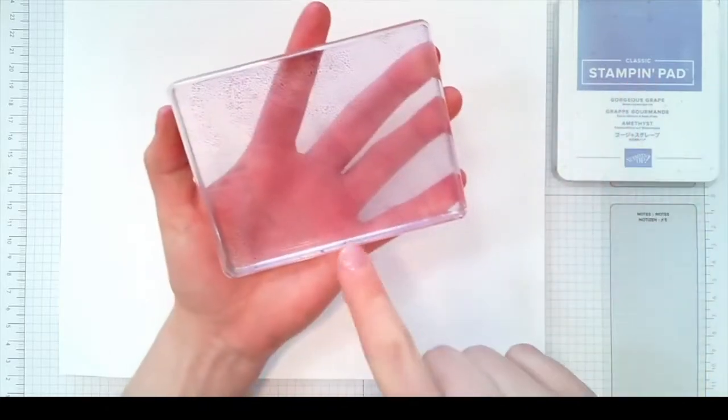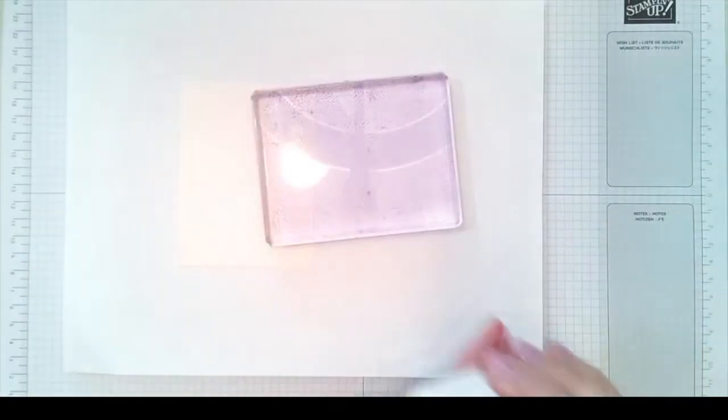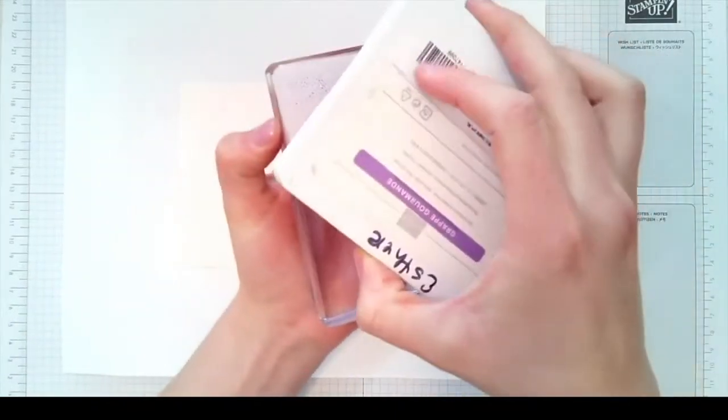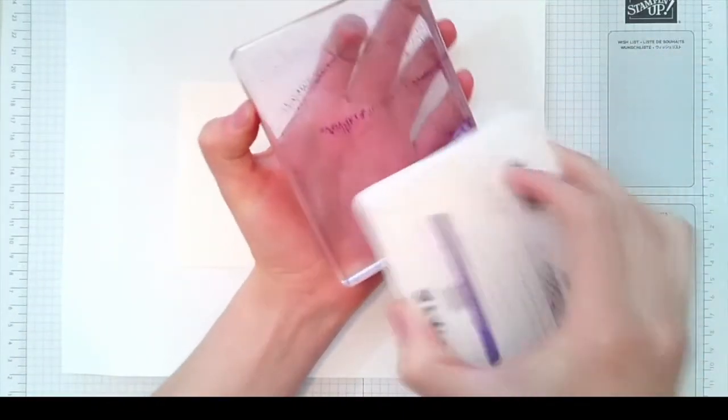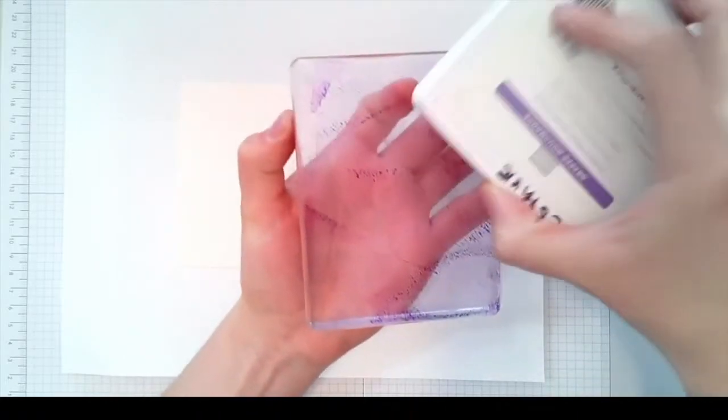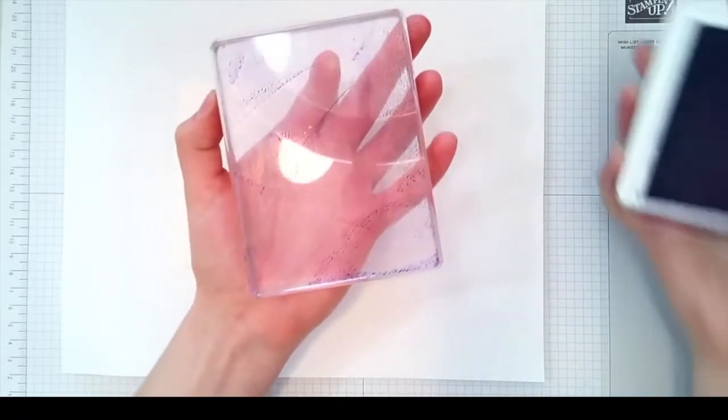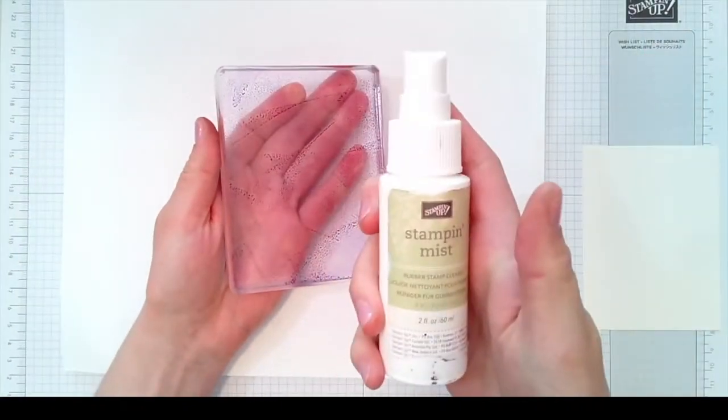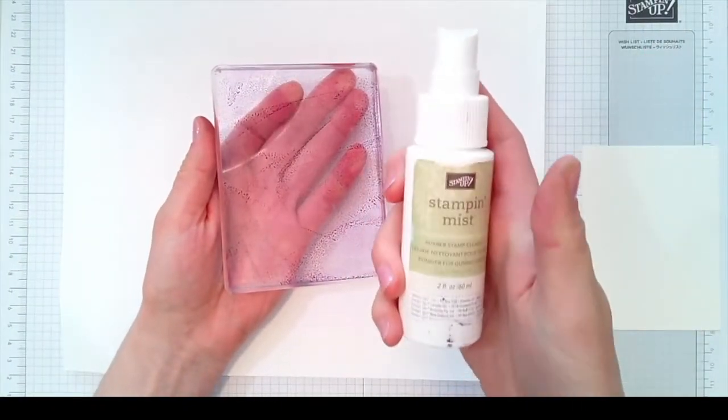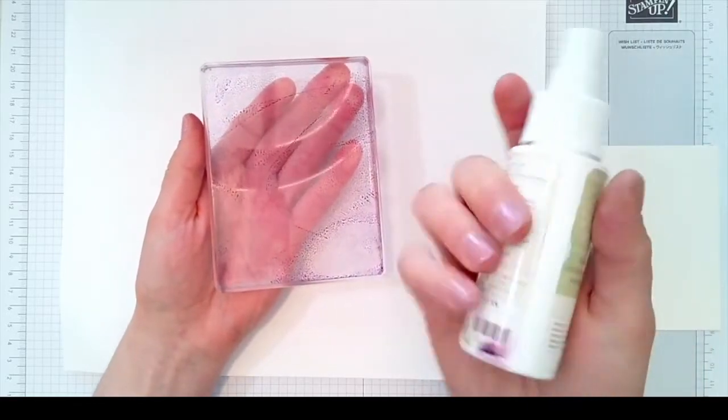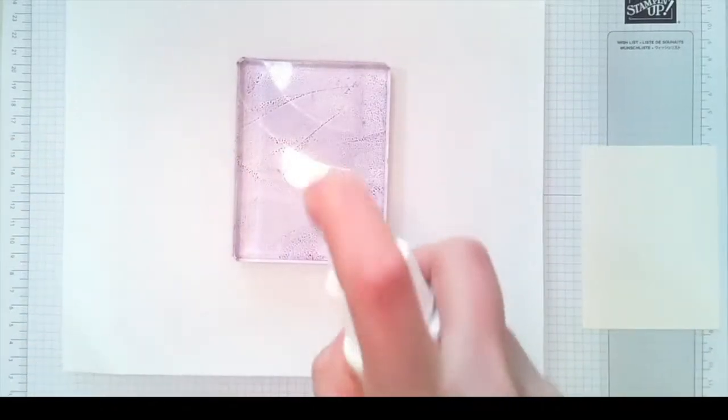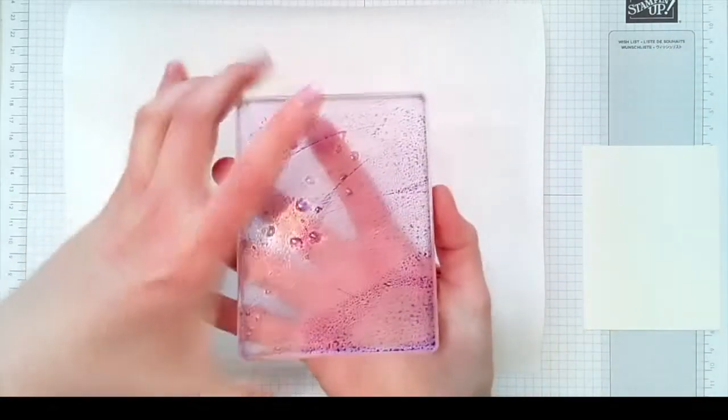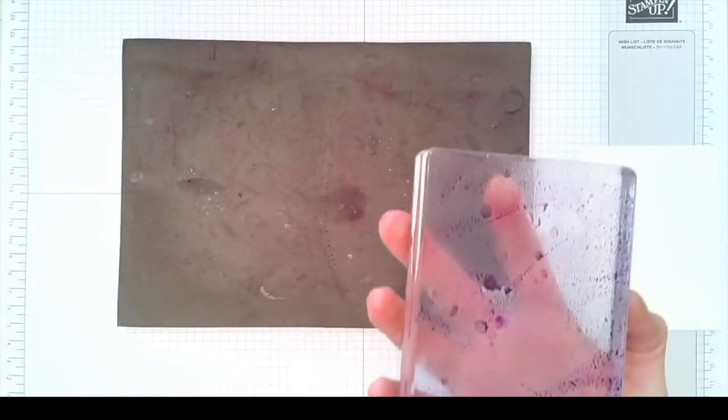Once I've completely inked up the base of that block I'm gonna take the Gorgeous Grape ink pad and just kind of add some splotches of darker purple for accents and interest. Then I'm using one of my old Stampin' Mist bottles with water. Just spritz all over and then you can lift up this paper so you don't get your project wet.